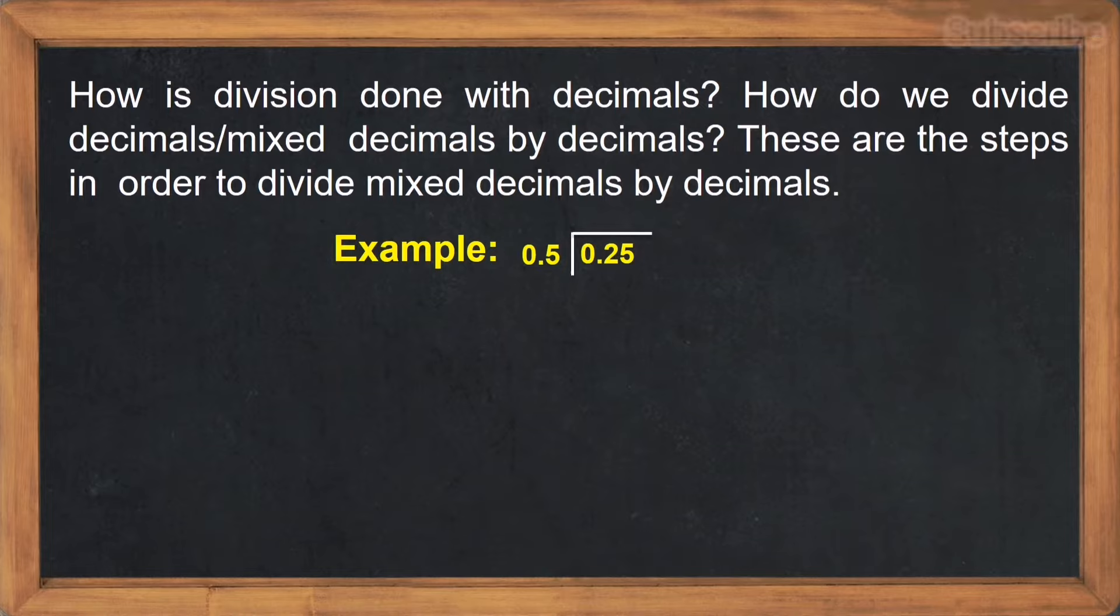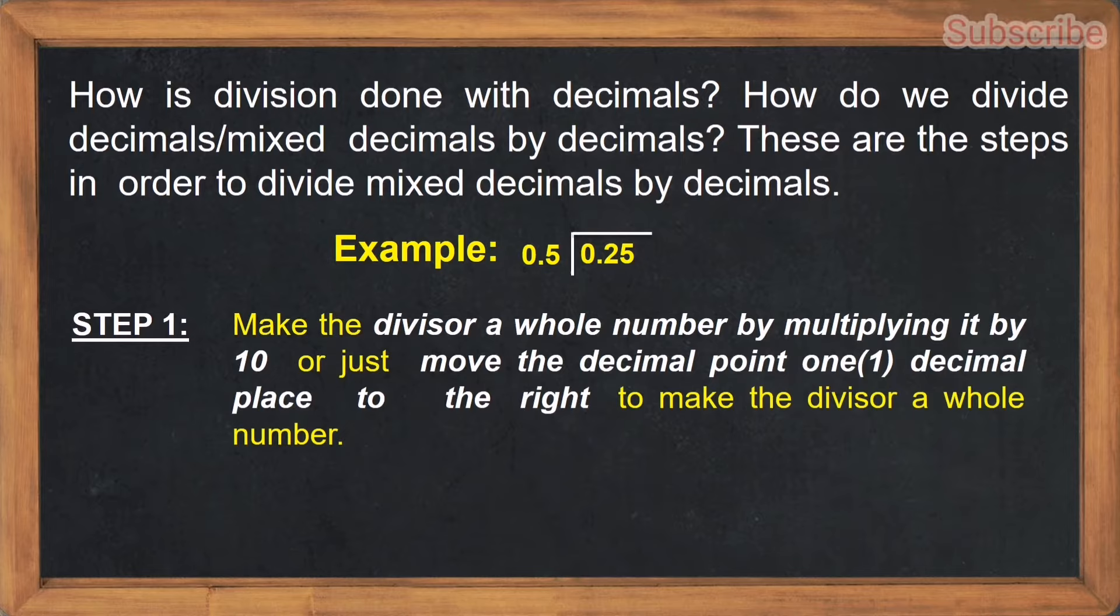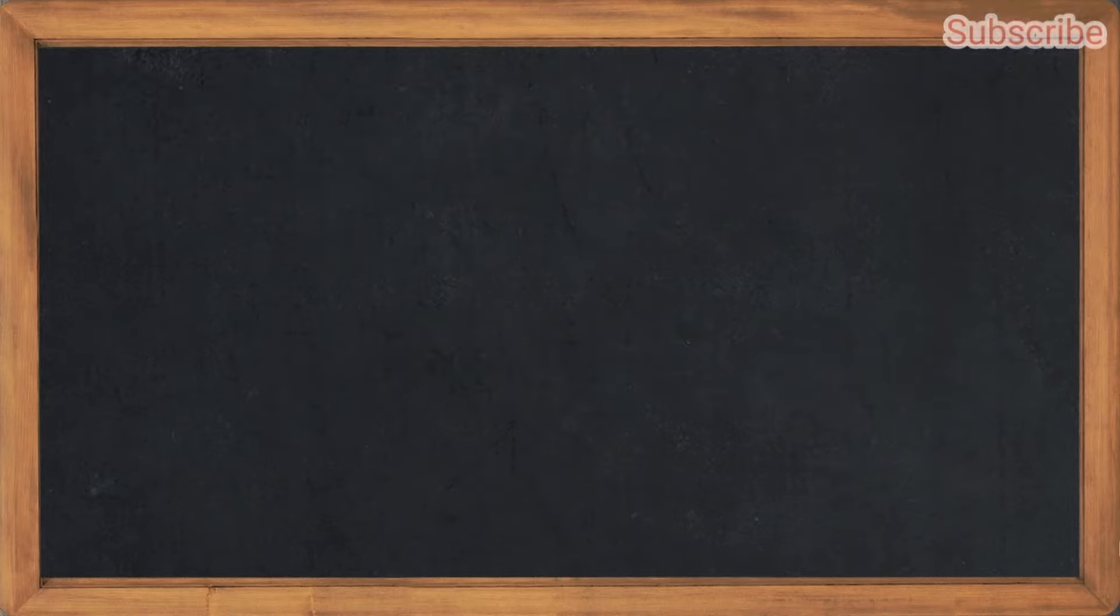To get the answer to the numbers we're dividing, again, we need to follow the steps. For step number one, make the divisor a whole number by multiplying it by 10, or just move the decimal point one decimal place to the right to make the divisor a whole number.